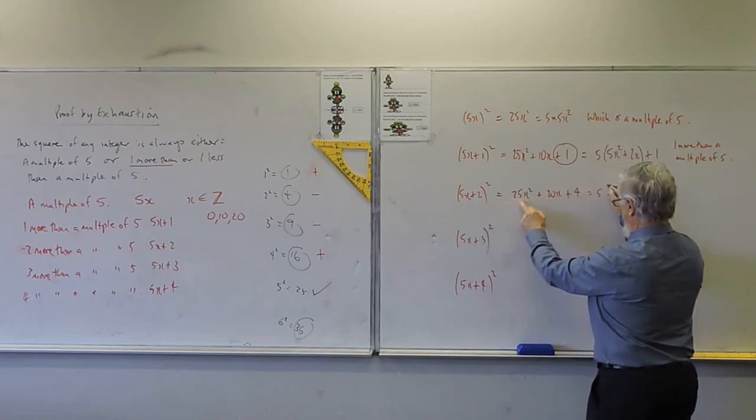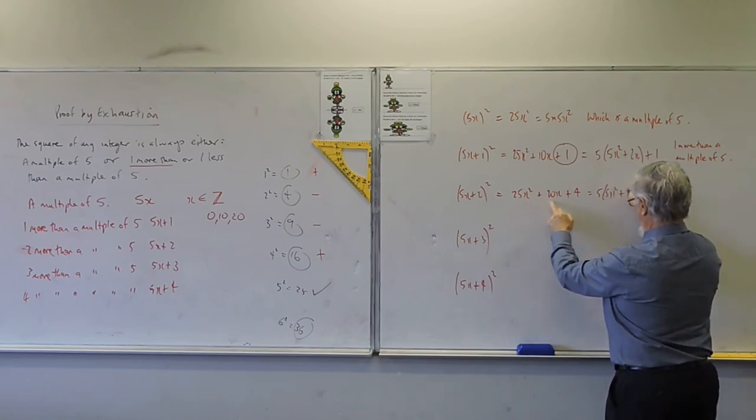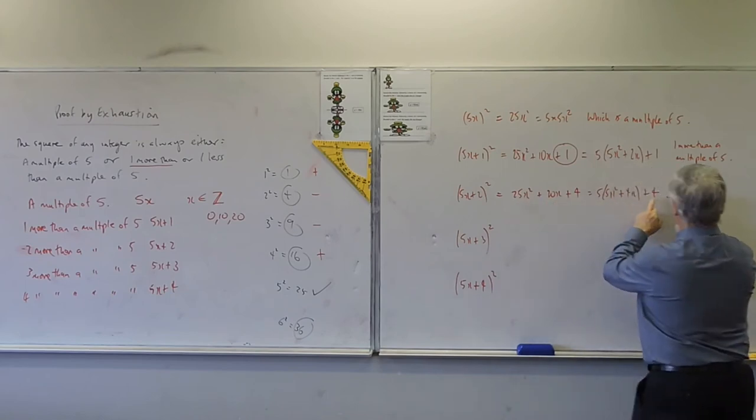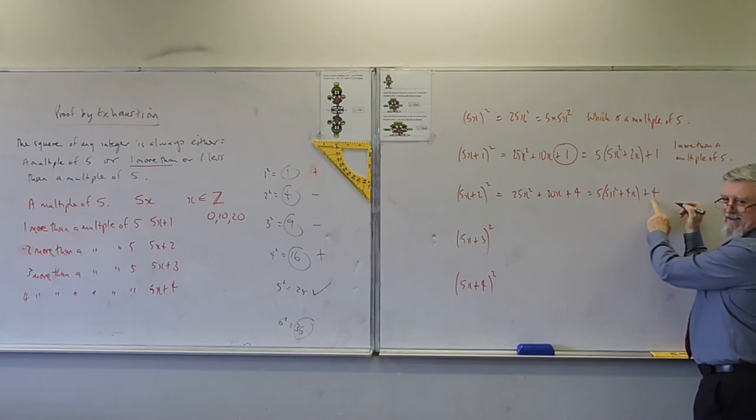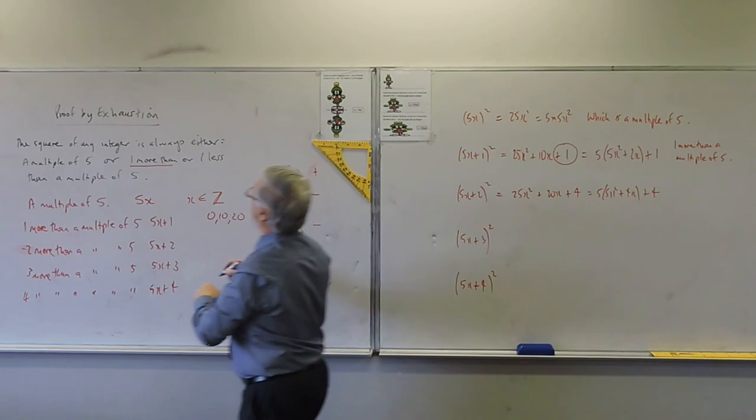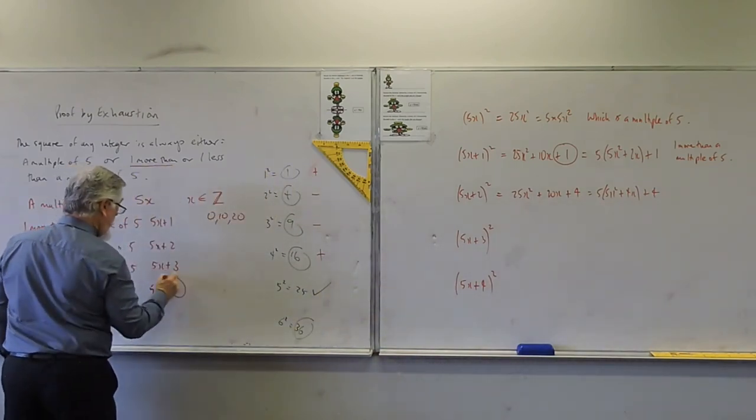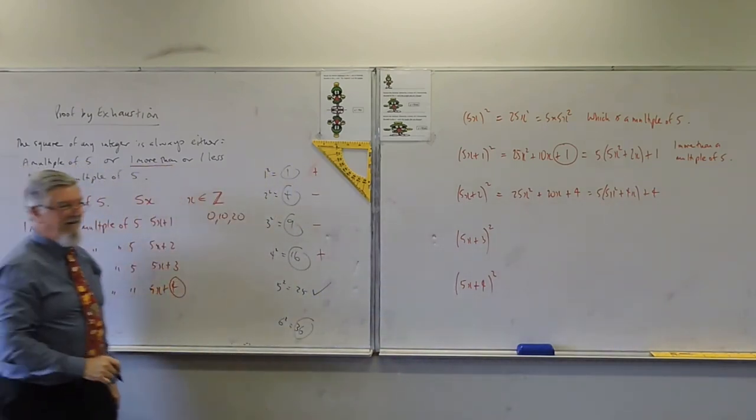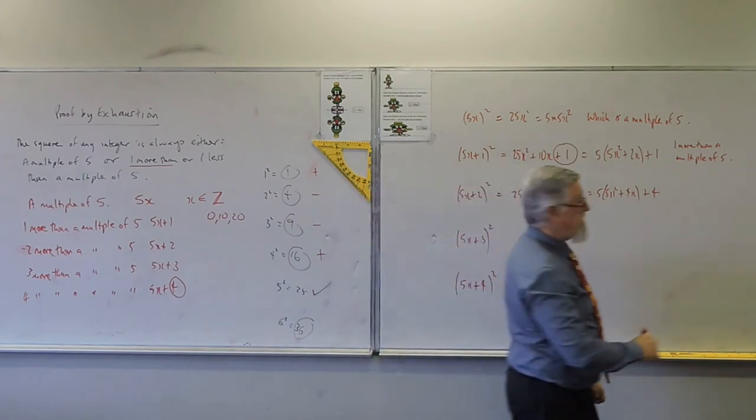So we've got 5 outside of 5X squared plus 4X plus 4, which is one less than the multiple of five. I think it's four more than. But are we going to write one more than? So we were dealing with four more than, but there's still one less than.